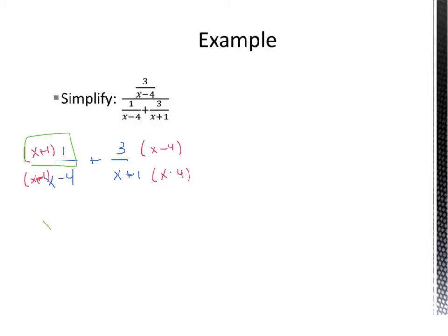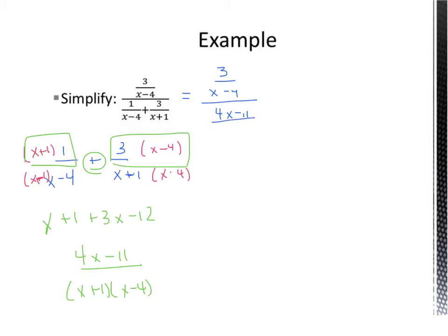Up here we have x plus 1, and over here, with a plus sign in the middle, we have plus 3x minus 12, which is going to be 4x minus 11 over x plus 1, x minus 4. If I come back up to the top, we still have this on top. Now on bottom, we have one fraction.